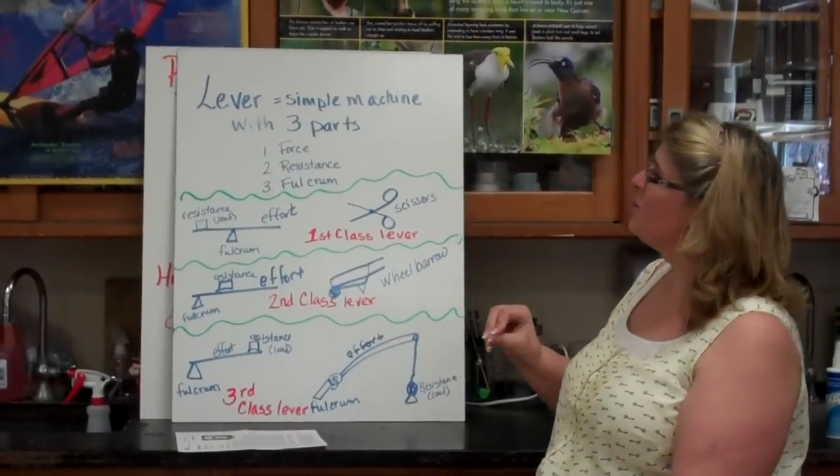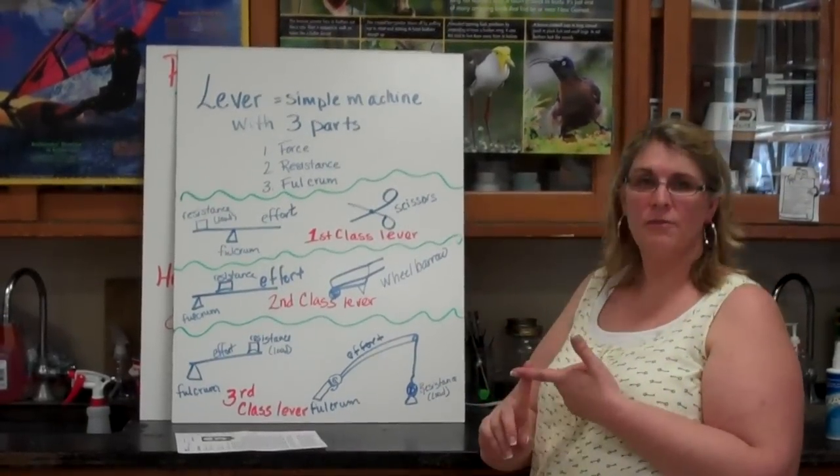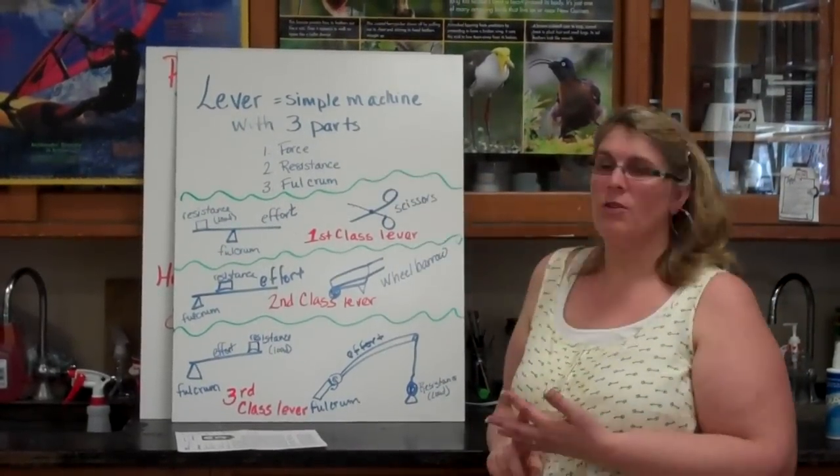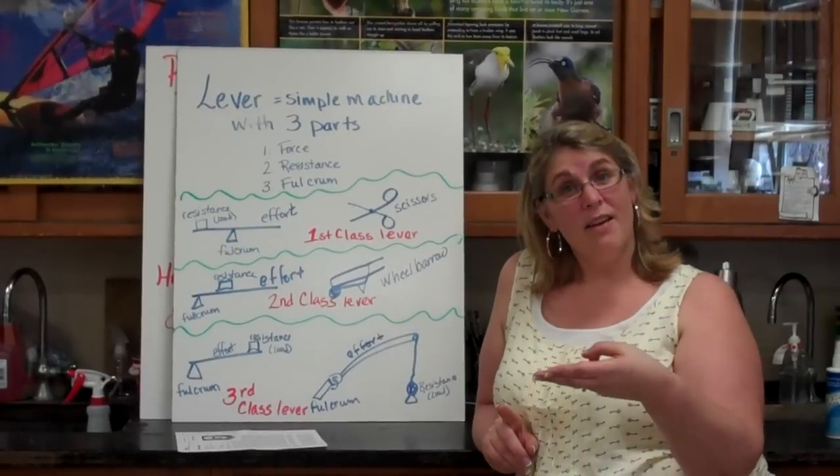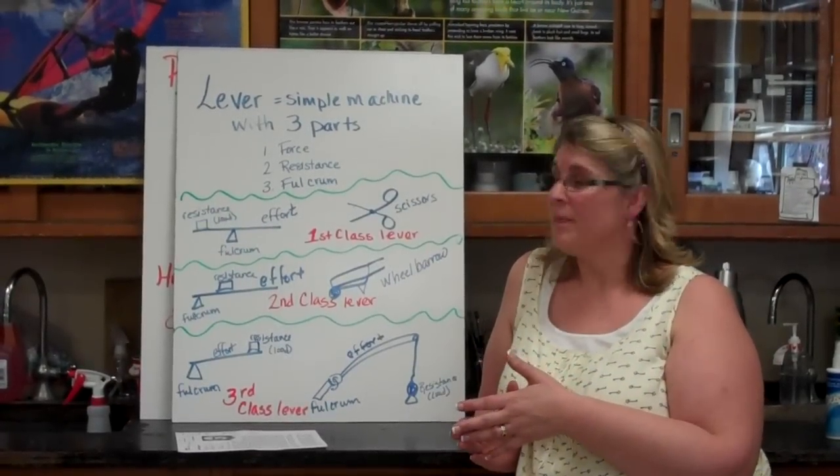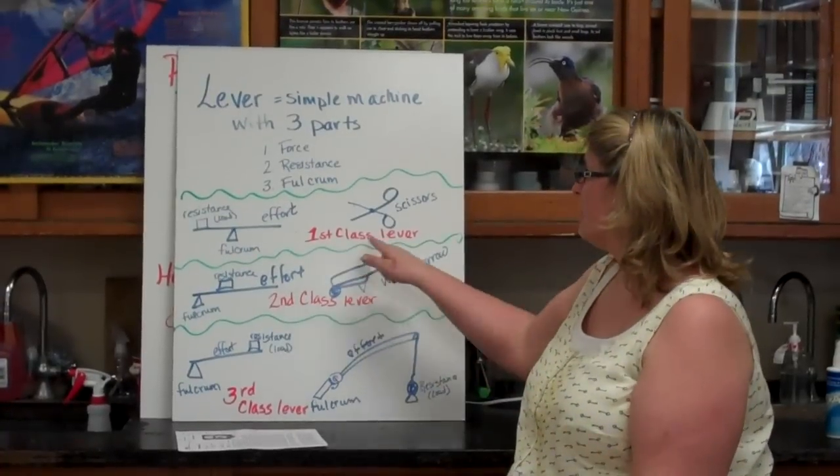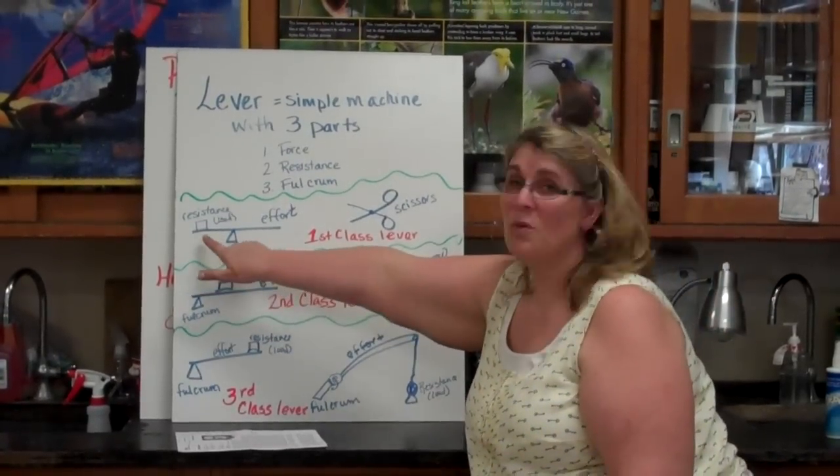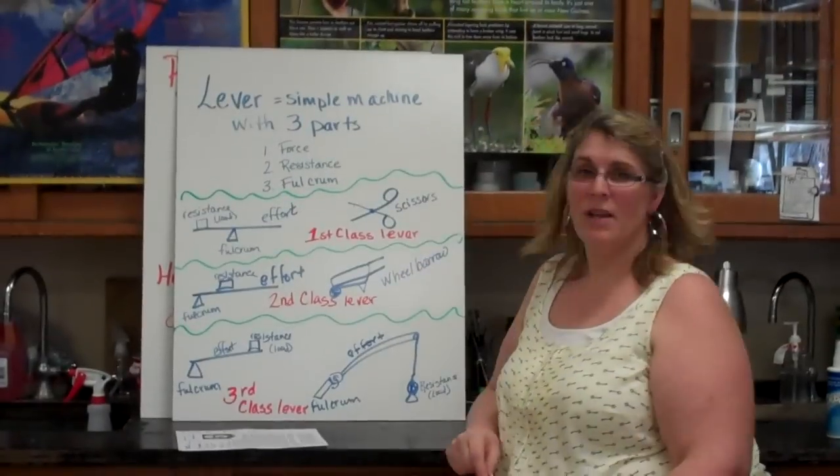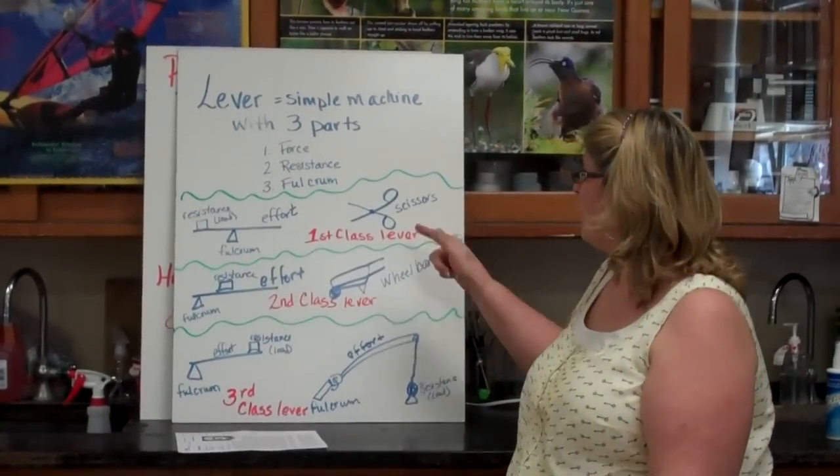Now, levers are a simple machine with three parts. There's the force, the resistance, and the fulcrum. And there are three kinds of levers, and it all depends on where those three elements are. The first class lever, the resistance is on one side, the fulcrum is on the other side, the effort is on the opposite side.